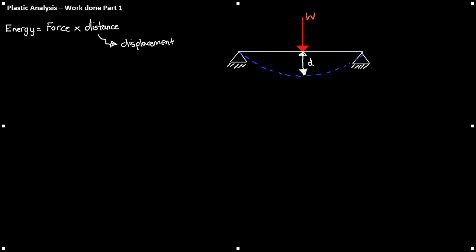Now if we have this example here where we have a simply supported beam with a point load W applied to the beam and it deflects by a distance of D, the energy or external work acting on the beam by the force is W times D equaling WD. The units of this being kilonewton meters.